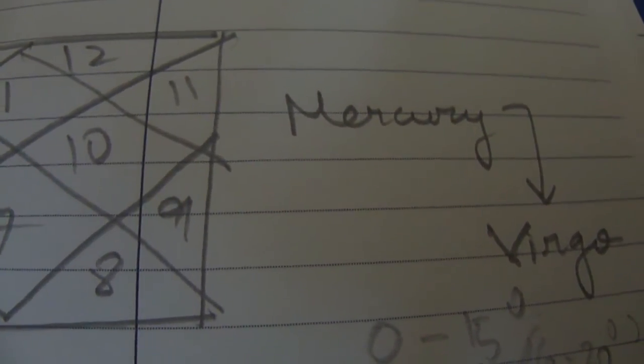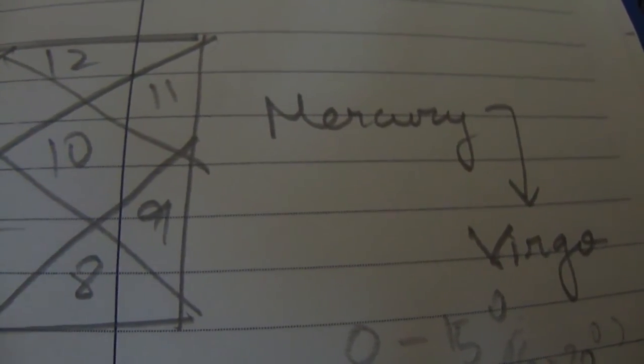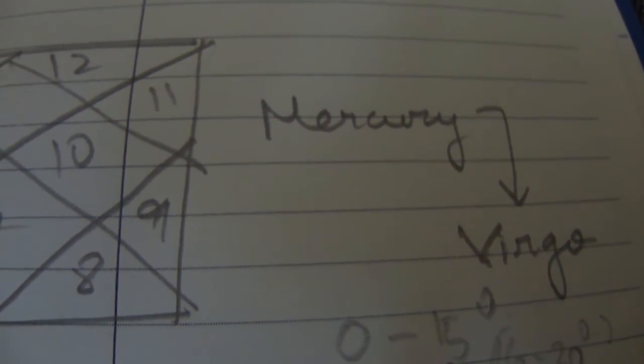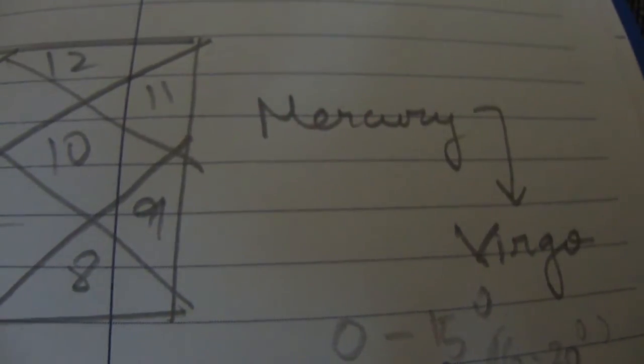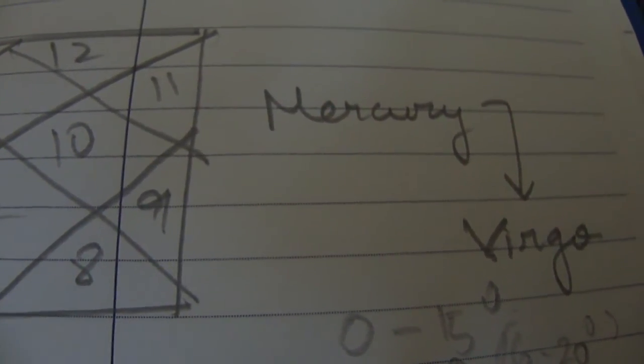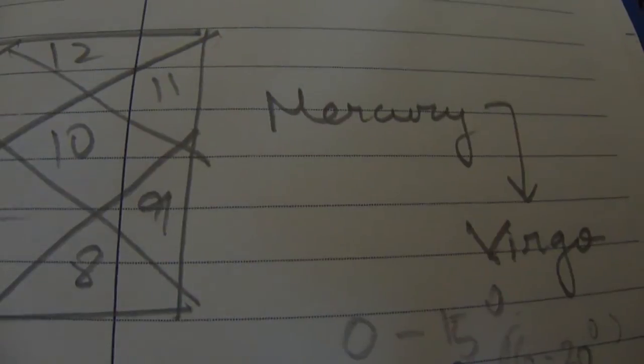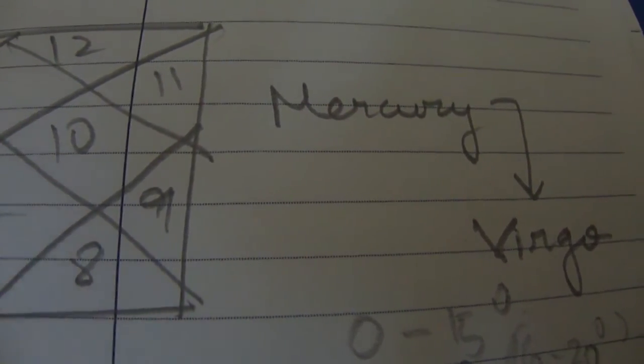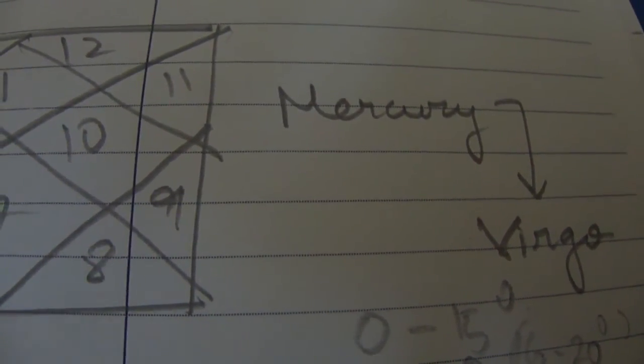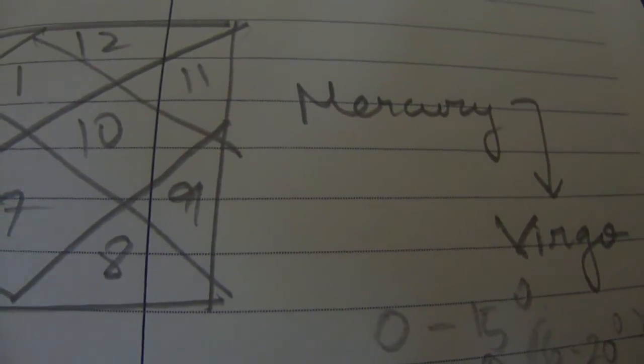Now further, Mercury's conjunction with Venus is considered even more auspicious, because Mercury and Venus are considered very good friends. And whenever these two come together and also Mercury is in an exaltation state, then this is a very good match.